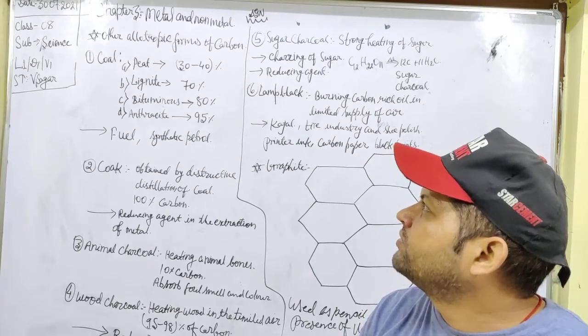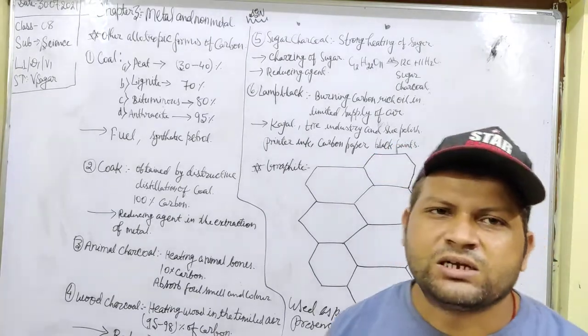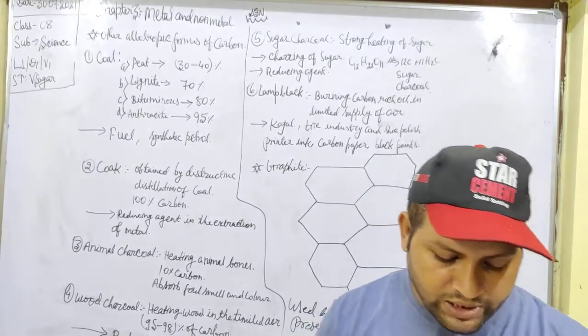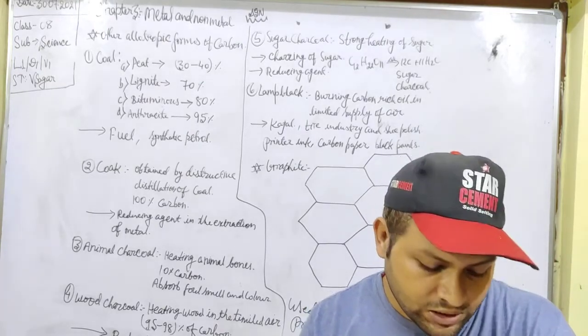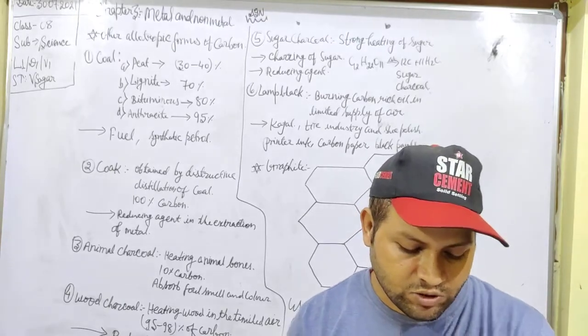Another form of allotropic forms of carbon is coke. It is obtained from the destructive distillation of coal. It is 100% carbon and used as a reducing agent in the extraction of iron and other metal oxides.